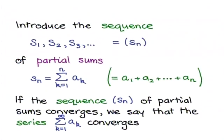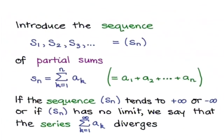If that limit exists, we can say that differently by introducing the sequence s_n of partial sums, where s_n is the sum of the first n terms of the series. If that sequence converges, we say that the series converges. If that sequence tends to plus infinity or minus infinity, or has no limit, we say that the series diverges. If the sequence of partial sums tends to a finite limit s, then we say that the series tends to that limit s, and we write it like this.